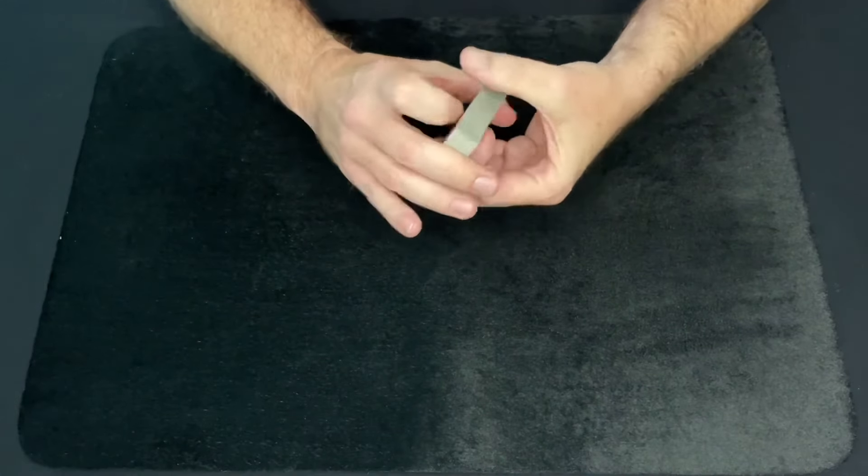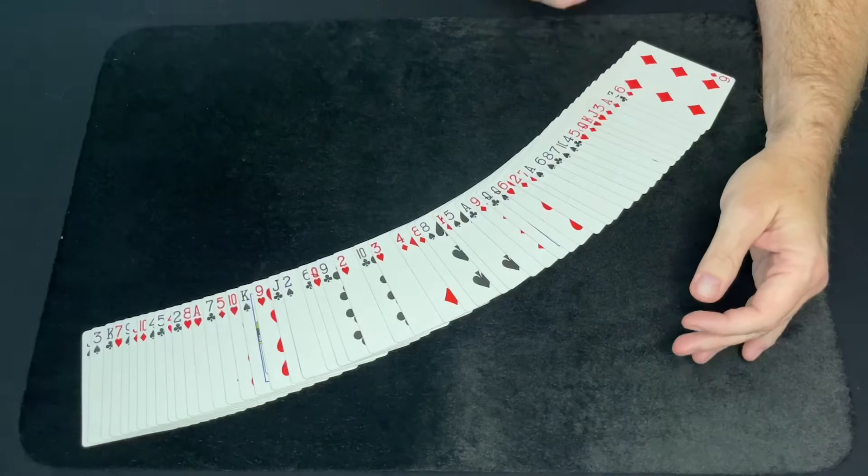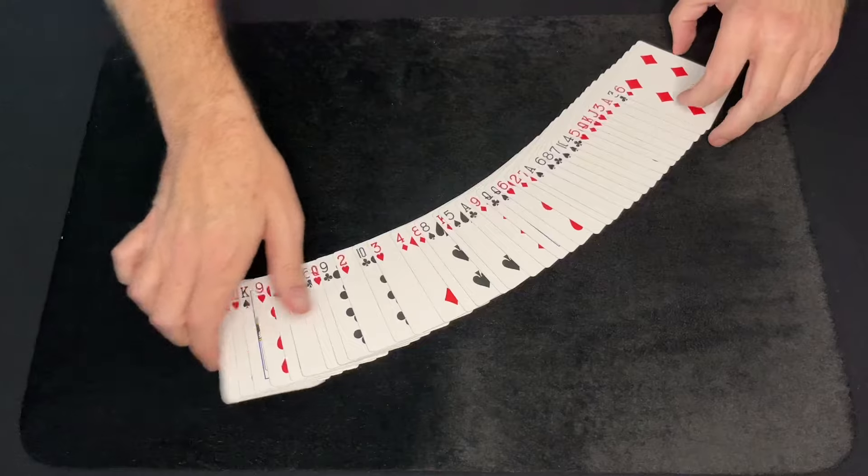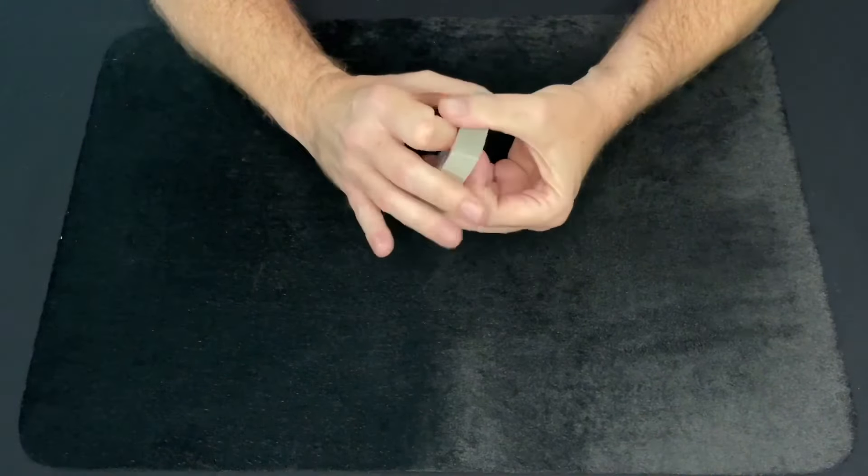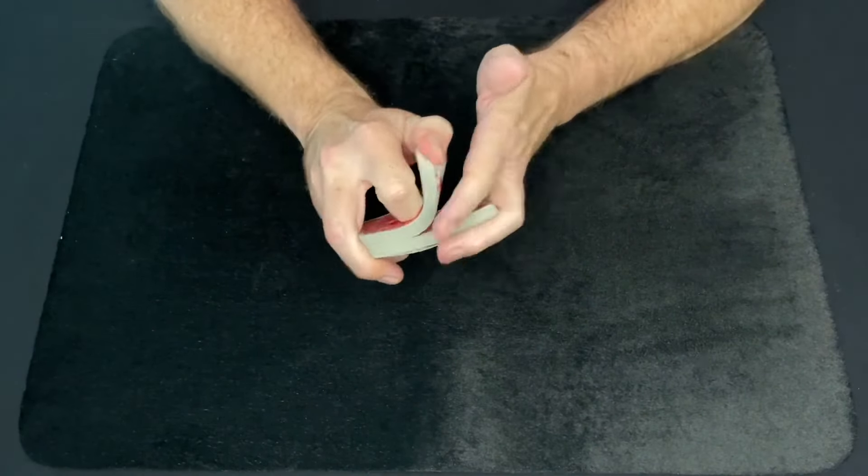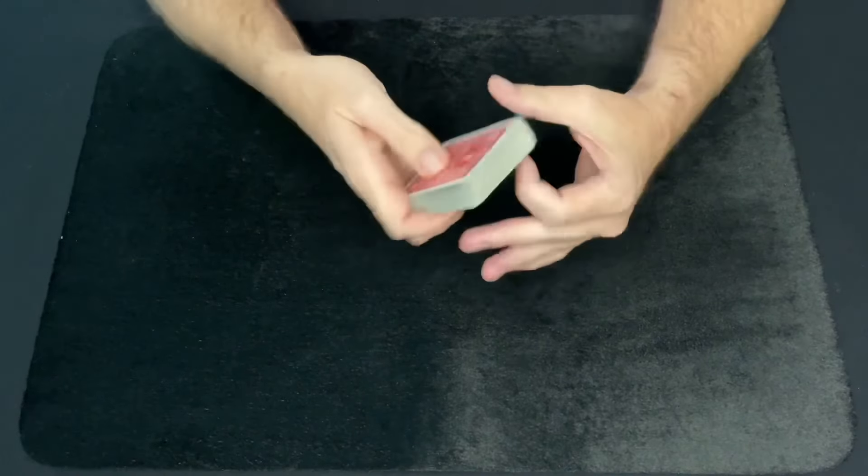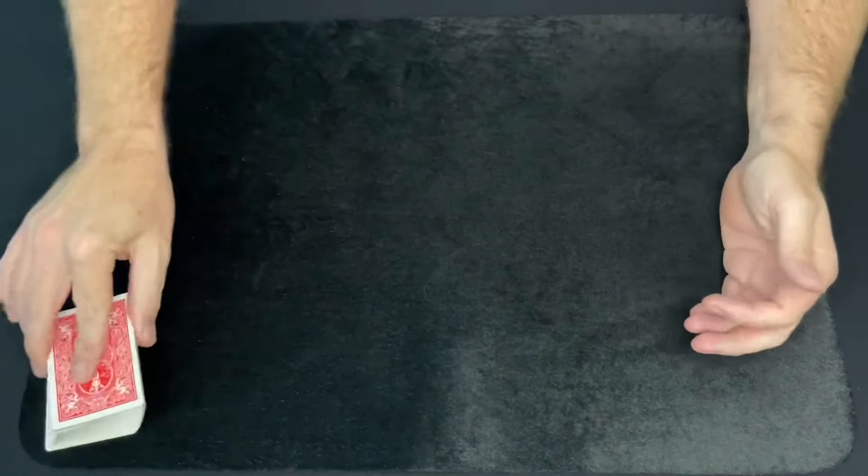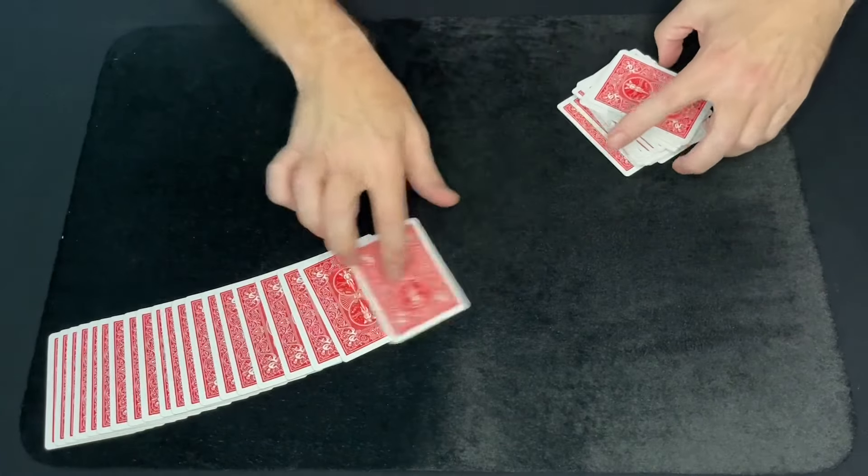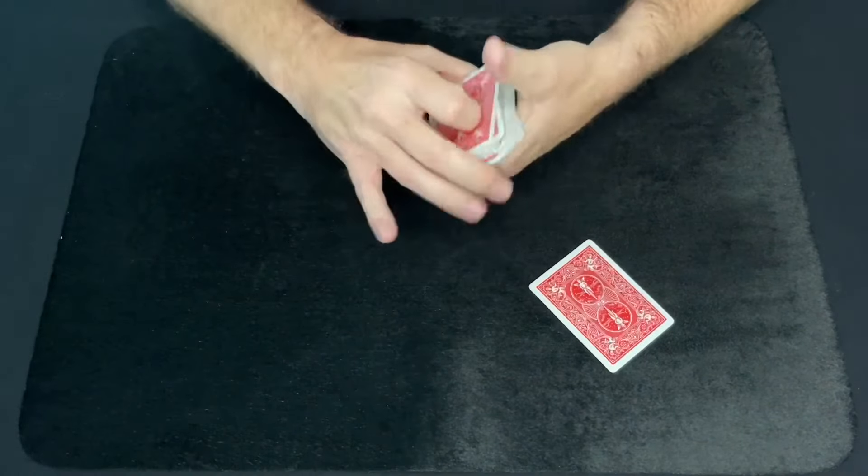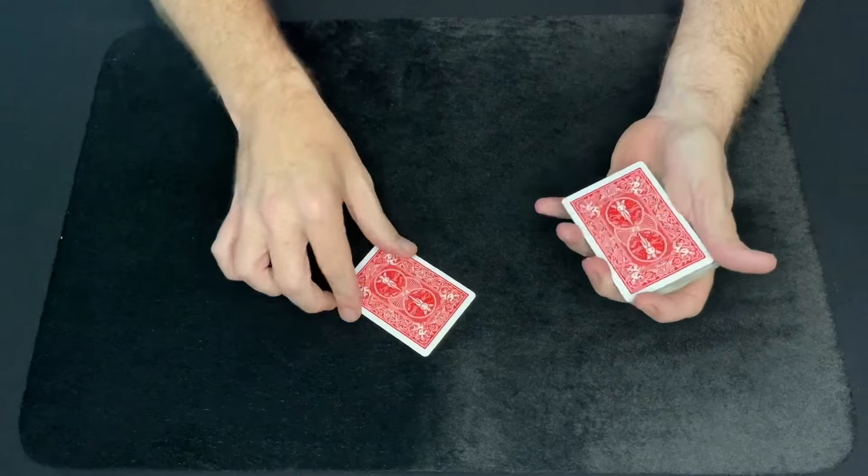You just have a regular deck of cards. And if they're new, it works a little bit better than if they're old. This is kind of an old deck, but you can have a spectator select any card that they want. You can give the card a shuffle. And what you're going to do is just want to get their selected card to the bottom of the deck. So you have them pick any card that they want. It doesn't matter. They look at it, remember it.